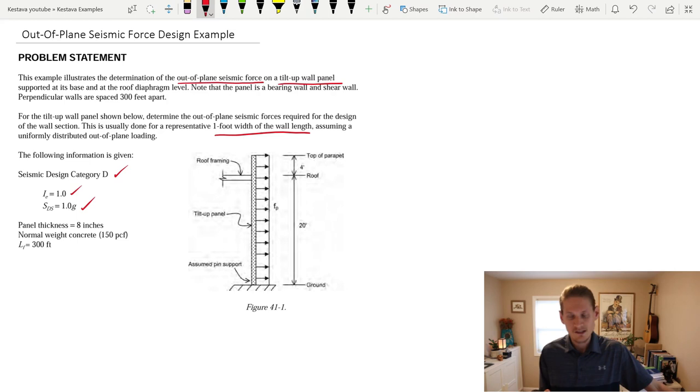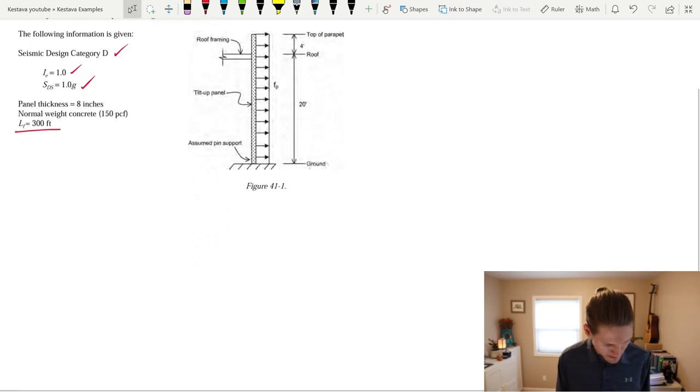But you have an S_DS of 1.0g, which is pretty high. I'm typically, in the Pacific Northwest, I'm used to using like 0.7 roughly. But obviously, it depends where you're from. So, 1.0, I would say, is high. Panel thickness, 8 inches. And we're using normal weight concrete with 150 pounds per cubic foot for the unit weight of concrete. All right, let's begin.